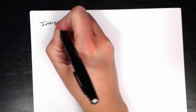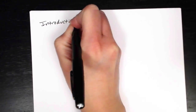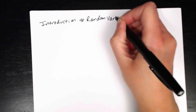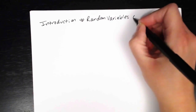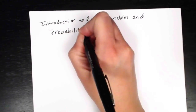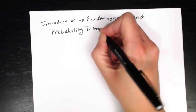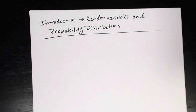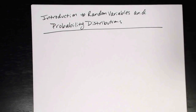In this video we're going to be taking a look at an introduction to random variables and probability distributions. We'll be focusing primarily on terms, definitions, and vocabulary. There's going to be basically very little mathematics involved in this video.